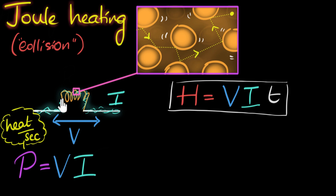All right, what if we don't know the voltage and the current? But maybe we know the voltage and the resistance, or maybe the current and the resistance. Can we still calculate the amount of heat generated? The answer is yes. Because we know what's the connection between voltage, current, and resistance. Ohm's law. It tells us that voltage is current times the resistance.